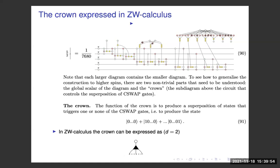Another question from Richie in chat: if there is a simple translation from ZW to ZX, is there also a translation from ZX to ZH giving more compact expressions — for example for the crown? To make a larger W state you still need to iterate certain lower W states, so it still won't be a super simple translation, but maybe it is simple.